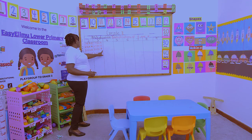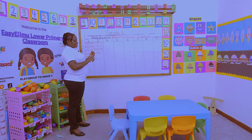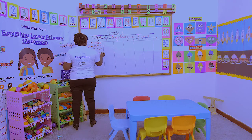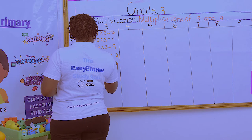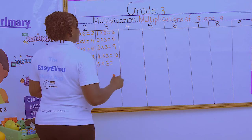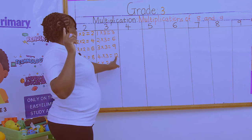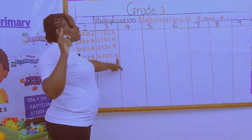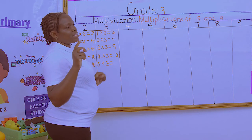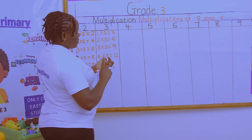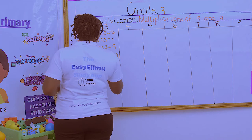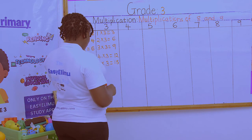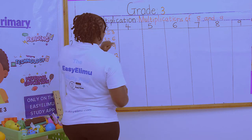4 × 3 is 9 + 3 = 12. 5 × 3 is 12 + 3 = 15. It is as simple as that — just continue adding 3 for the rest of the table.